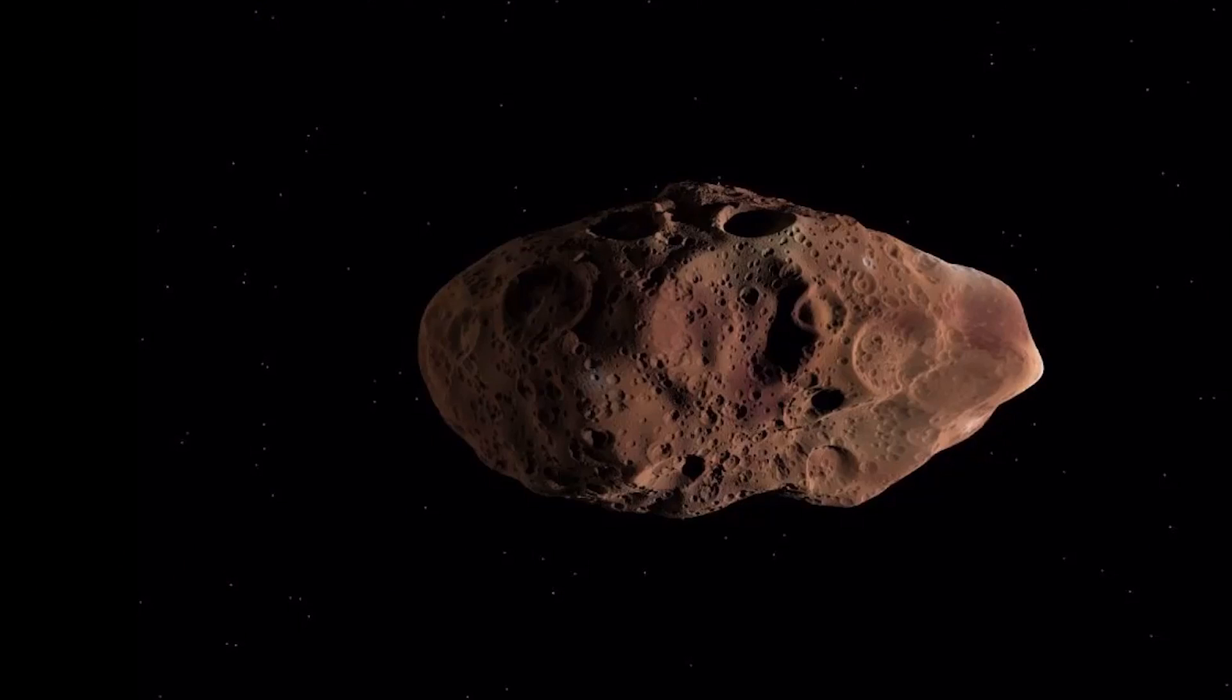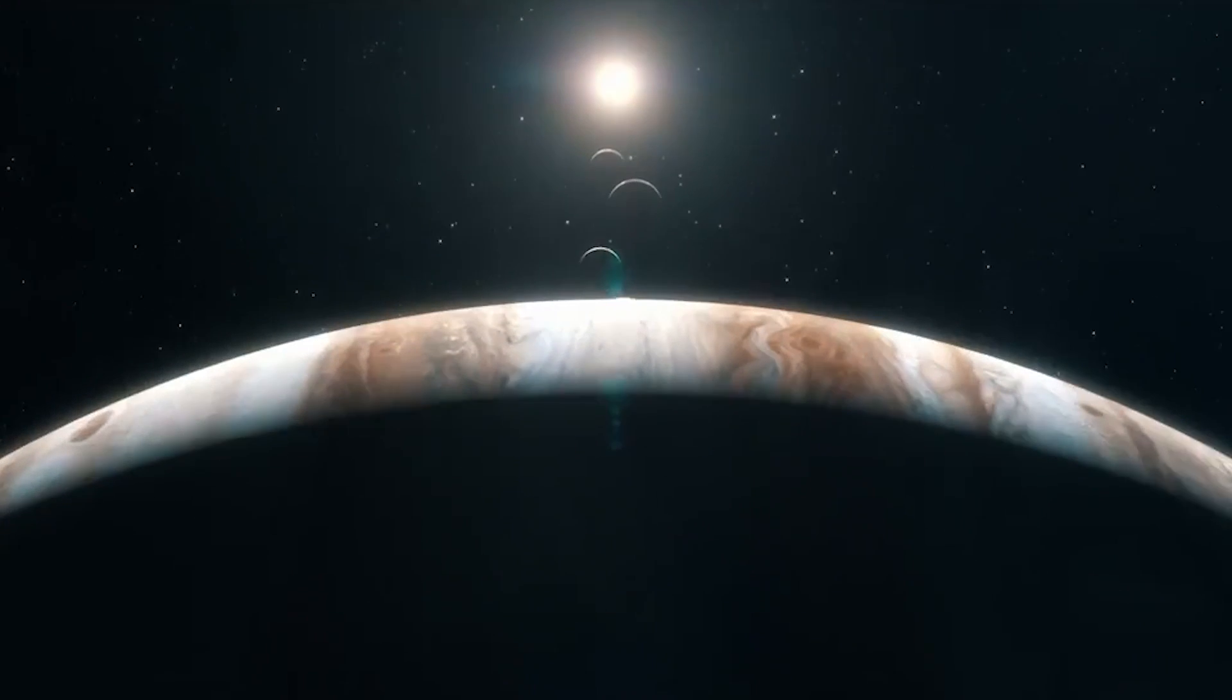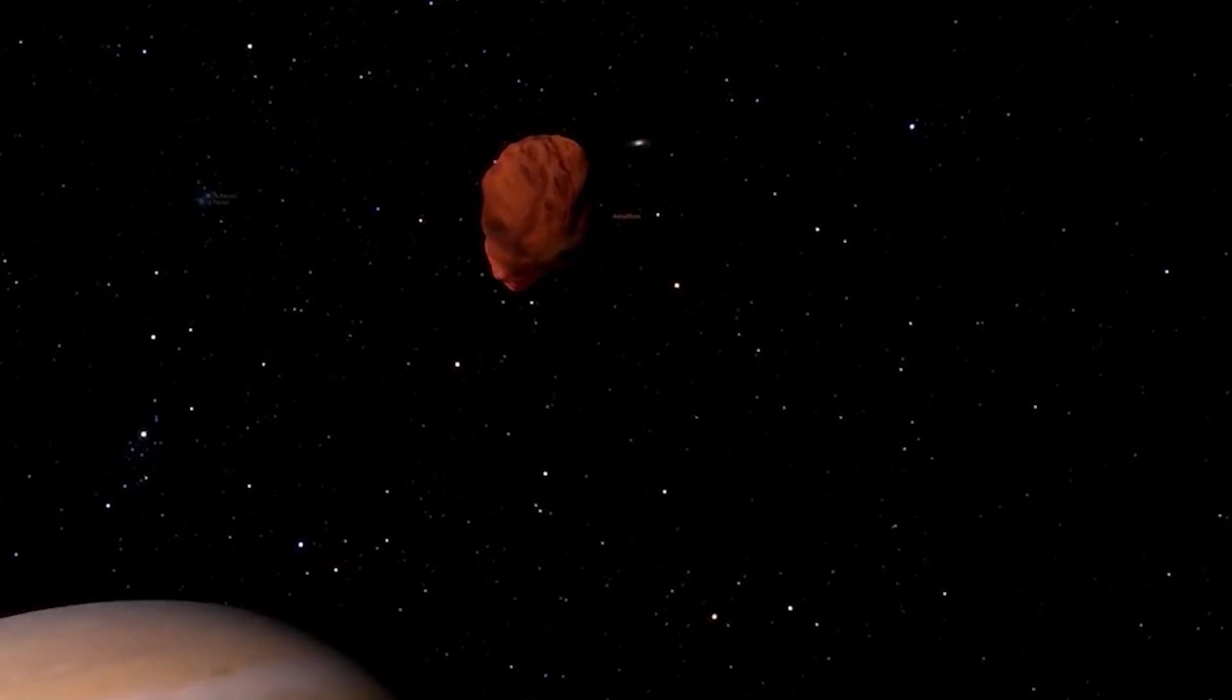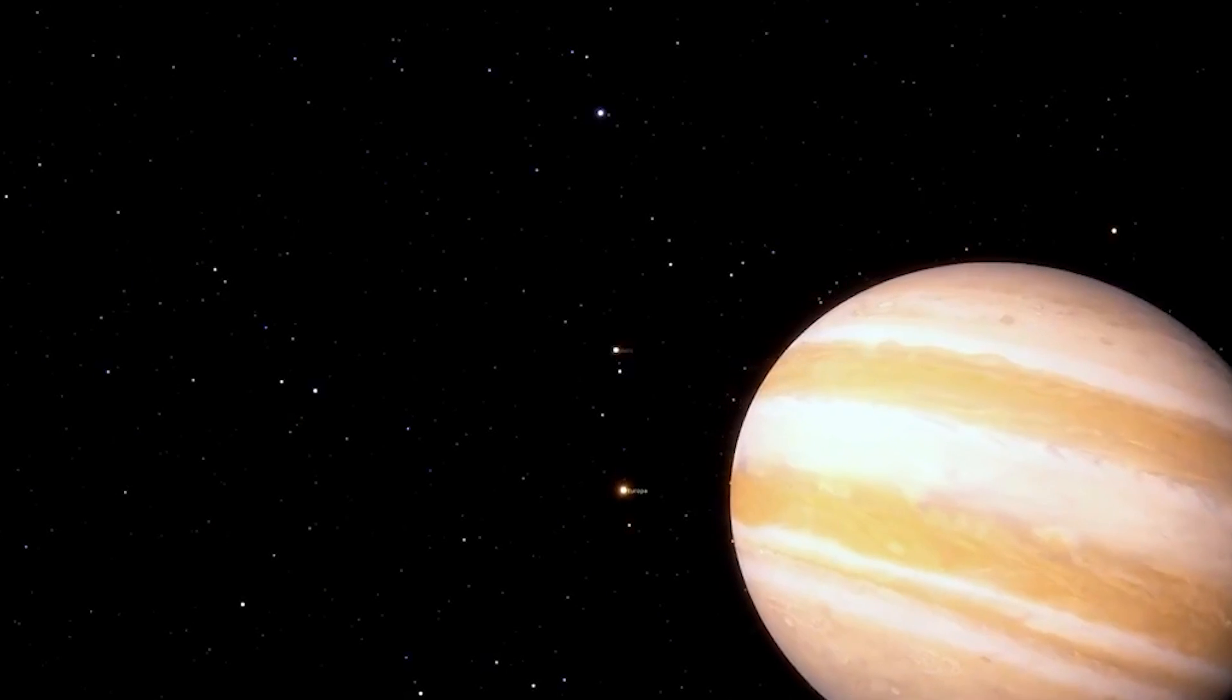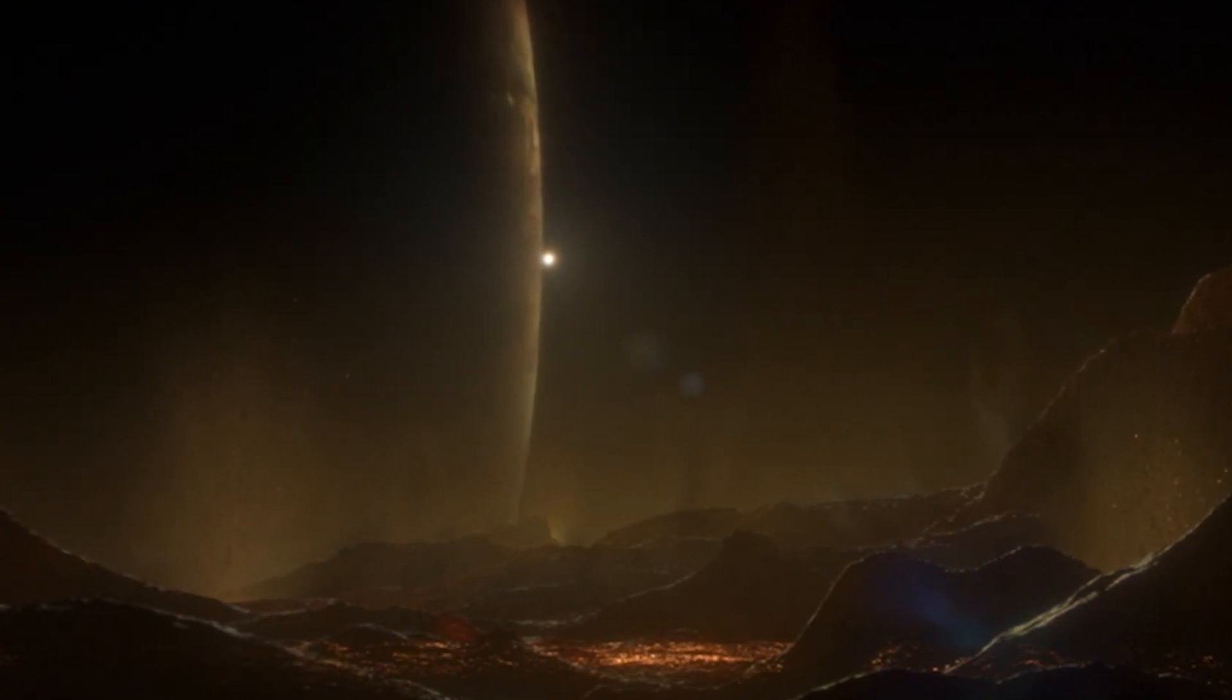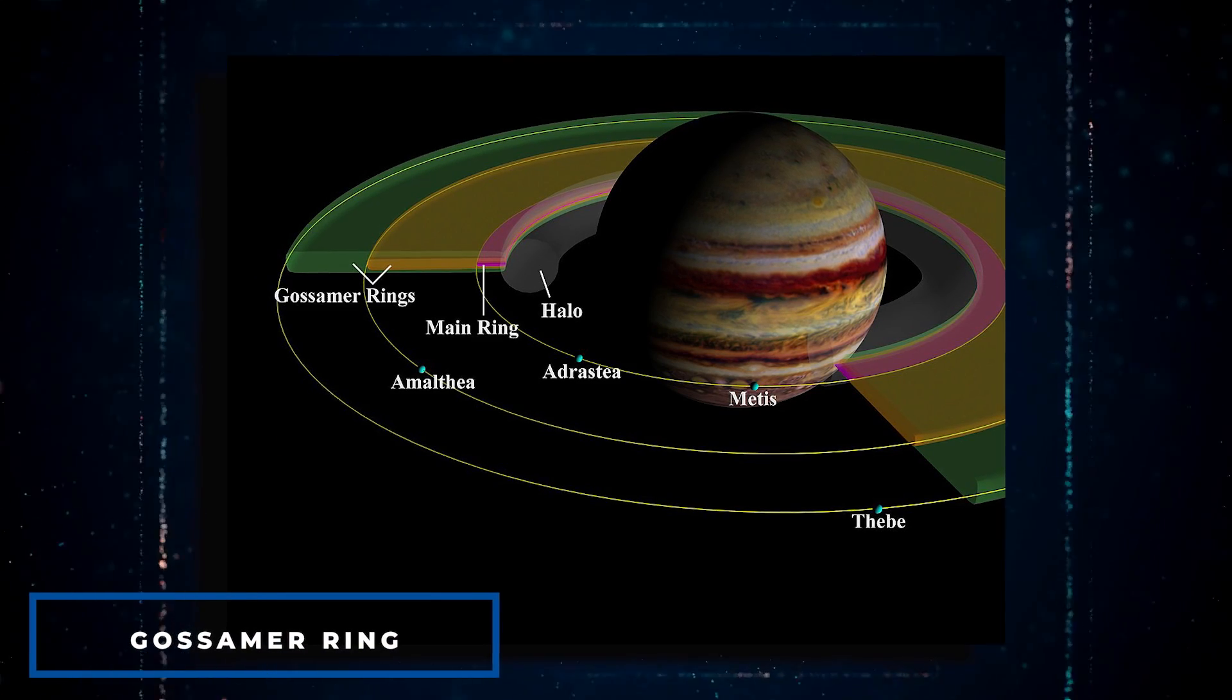According to infrared photometry, Amalthea has a temperature of 155 Kelvin. As per studies conducted by the Galileo orbiter in the 1990s, the moon has hills and valleys and is riddled with impact craters. It is the reddest body in our solar system and scientists believe the color is created by sulfuric compounds in the nearby volcanically active Jovian moon Io.